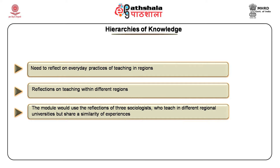This module has four sections. Section 1 discusses and analyzes the reflections of Santosh Singh teaching in a government degree college in Uttaranchal. Section 2 examines the experiences of Pushpesh Kumar teaching in a regional university in the west of India. Section 3 evaluates the thoughts and perceptions of Subratnanda as he engages with what it is like teaching in a university based in the northeast of India. Section 4 ties up the reflections and examines the similarities and differences in the experiences shared by the practicing sociologists.